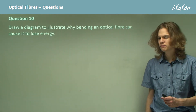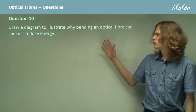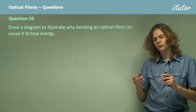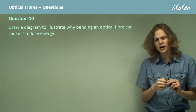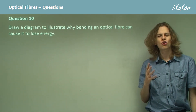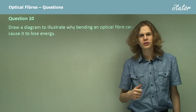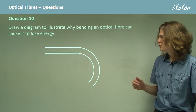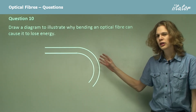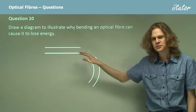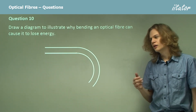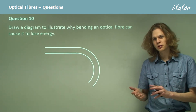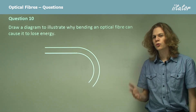Finally, question 10. Draw a diagram to illustrate why bending an optical fiber can cause it to lose energy. If we take an optical fiber and twist it very tightly, we would no longer get total internal reflection. Here we have an optical fiber — I've only drawn the core; the cladding would add an extra layer around each edge. Light comes in at a very large angle in the straight part, giving us total internal reflection.